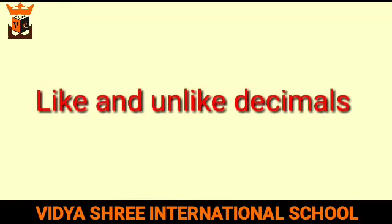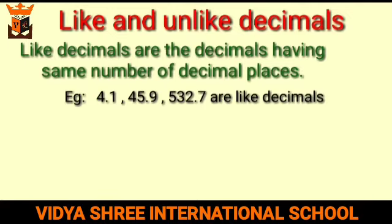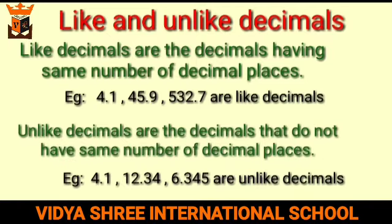Like and unlike decimals: like decimals are decimals having the same number of decimal places. For example, 4.1, 45.9, and 532.7 all have only one decimal place. Unlike decimals are decimals that do not have the same number of decimal places. For example, 4.1, 12.34, and 6.345 all have different numbers of decimal places.